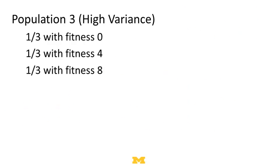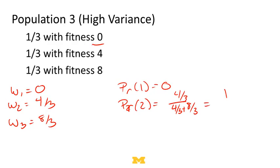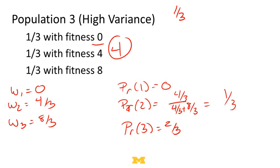Now let's do a population with really high variance: one third with fitness 0, one third with fitness 4, and one third with fitness 8 — average fitness again 4. The weight on strategy 1 is 0, the weight on strategy 2 is 4/3, and the weight on strategy 3 is 8/3. The probability of being strategy 1 next time is 0. The probability of strategy 2 is 4/3 over (4/3 + 8/3), which is 1/3. So the probability of strategy 3 is 2/3. The new average fitness is (1/3 × 4) + (2/3 × 8) = 4/3 + 16/3 = 20/3, which is 6 and 2/3.